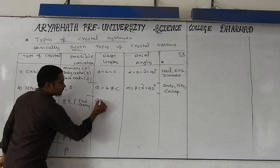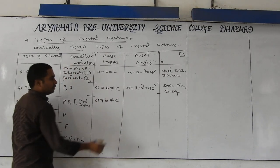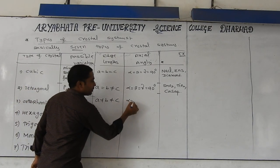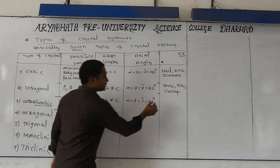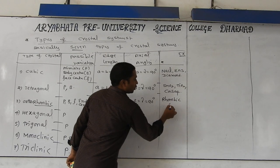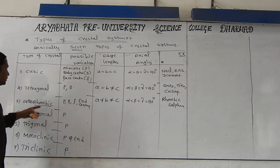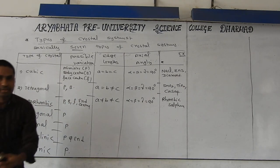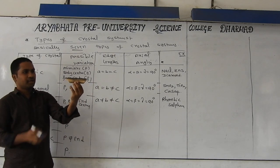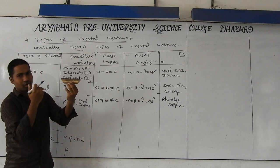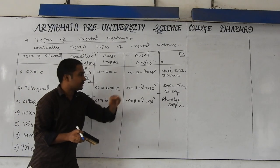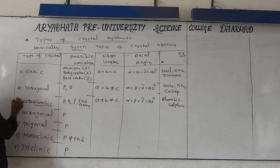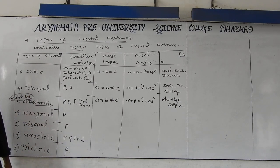For orthorhombic: a ≠ b ≠ c. All angles will be different in length but all angles should be equal to 90 degrees. An allotropic form of sulfur — rhombic sulfur — is the example for this. The shape is orthorhombic: length, breadth, and height all are different, but all angles should be 90 degrees. The best everyday example for this is a matchbox — matchbox is the orthorhombic crystal system.